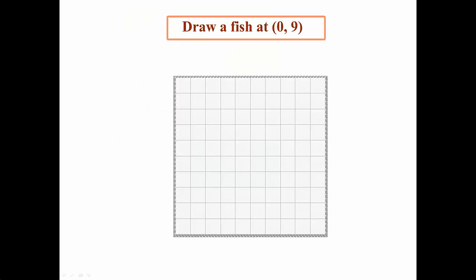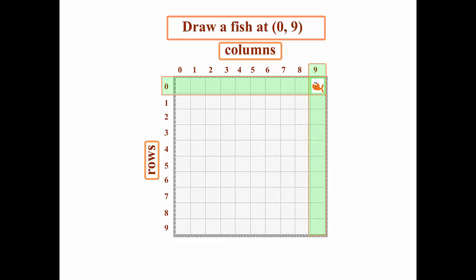Now how about the fish at 0, 9? Well, like we said before, the row would be 0, or the first row, and the column 9, the last column, or this position here.